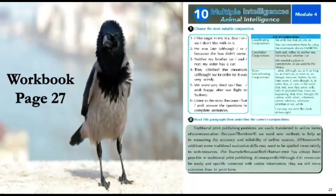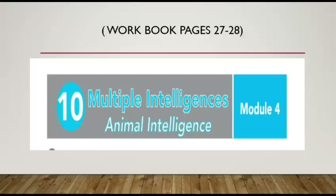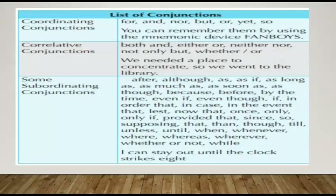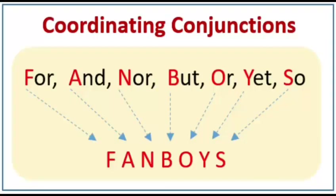Welcome, my dear students, to our English period for Grade 9, Unit 10, workbook page 27. The title of our unit is 'Animal Intelligence.' In our lesson today, we are going to study a list of conjunctions. Let's start with the first type of these conjunctions.